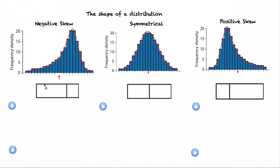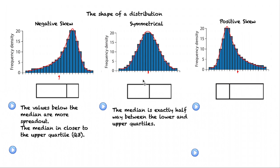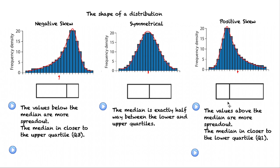On the previous slide we considered these histograms. But let's have a look at box plots and the characteristics that we see in box plots. Here we see the negative distribution and we see that spread out in the negative direction. This will mean that the median line is closer to the upper quartile, also named Q3. In our symmetrical distribution, the median is exactly halfway between the lower and the upper quartiles. In the positive skew, we see that spread out in the positive direction and the median is closer to the lower quartile, Q1.